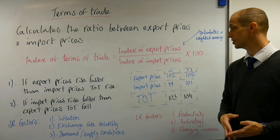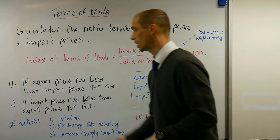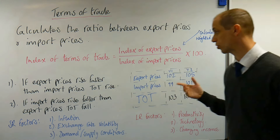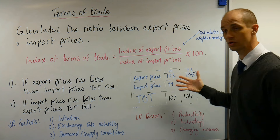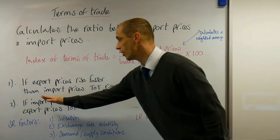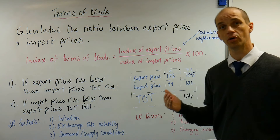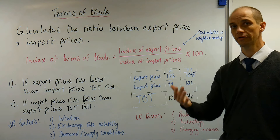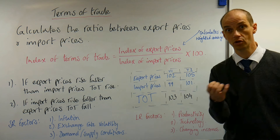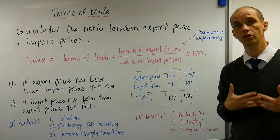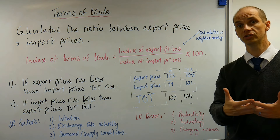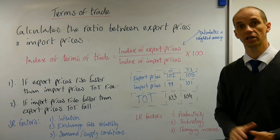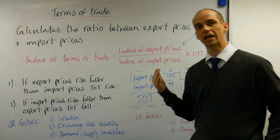Whether improving terms of trade is good or bad really depends. The key principles: if export prices rise faster than import prices, terms of trade rise; if import prices rise faster than export prices, terms of trade fall. A falling terms of trade — say, an index of 99 — means you need to export more goods to receive that same given basket of imports.